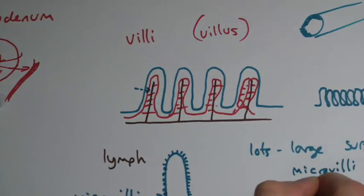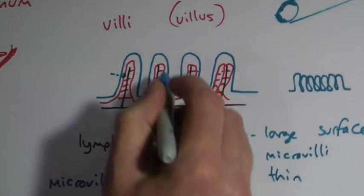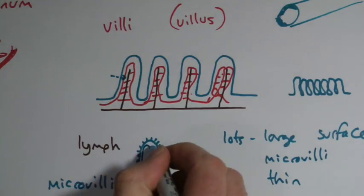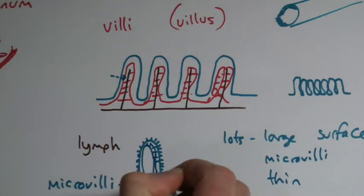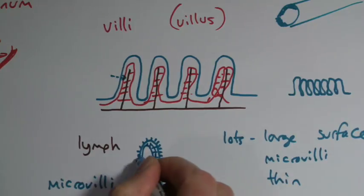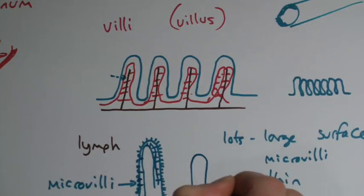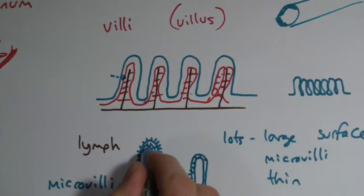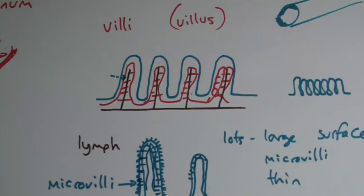The villi themselves are pretty thin, so not too thick. If there was loads and loads of cells in here, big layers of cells, it would be difficult to get through to the blood in the middle. But they don't. They're very thin. There may be only a few layers of cells to get through. So, not lots and lots of cells like I've drawn here. Just a few. So thin.